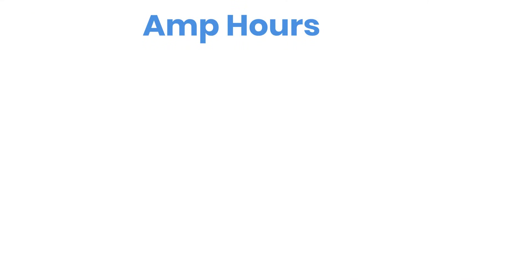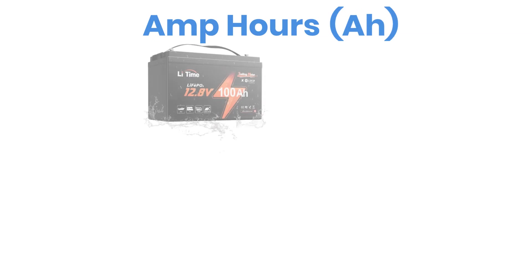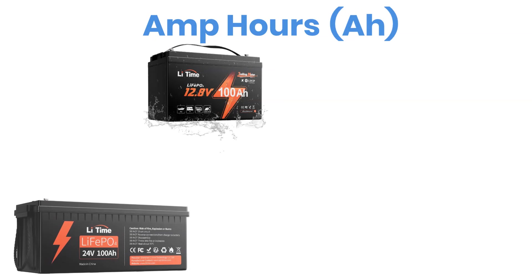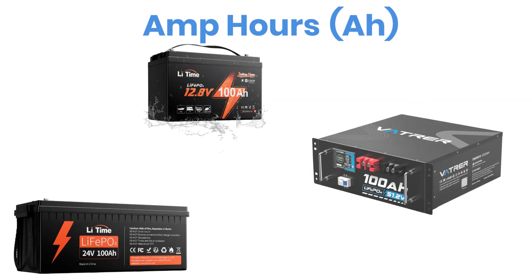Let's start with amp hours. Amp hours, often written as AH, tell you how much electrical charge a battery can deliver over time. Think of it as the amount of current the battery can supply for one hour. You might see a battery labeled 100 amp hours, and that same 100 amp hour rating can appear at different voltages.